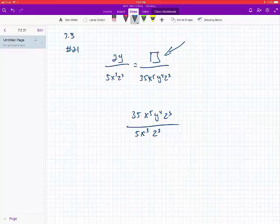7.3, number 21. There's a proportion in this example: 2y over 5x cubed z cubed is equal to an unknown over 35x to the 5th, y to the 4th, z to the 3rd power.